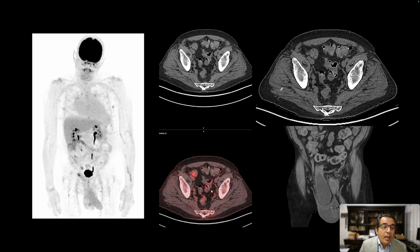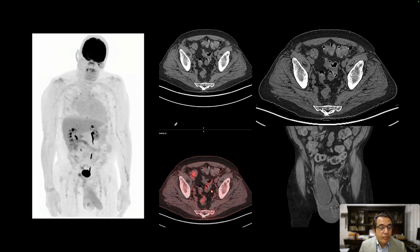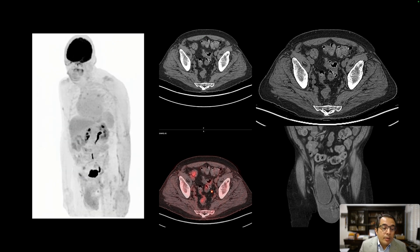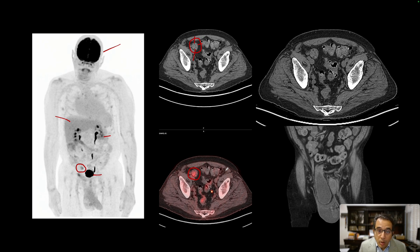Here is our next patient. They have a history of lymphoma and presented for a follow-up FDG PET-CT study. On the whole-body rotating image, we see physiologic uptake in the brain, liver, and excretion from the kidneys into the urinary bladder. A notable focus shows a heterogeneous soft tissue density with possible internal fat and ill-defined mild hypermetabolism. We initially considered whether this could be a lymph node with hypermetabolism representing recurrent lymphoma.